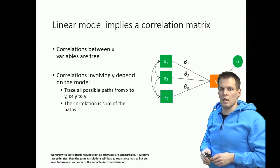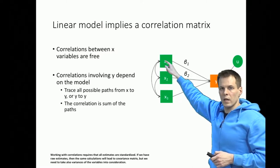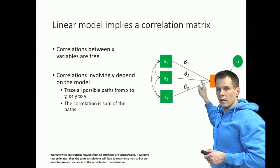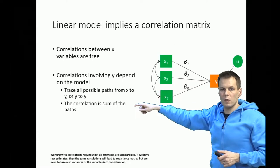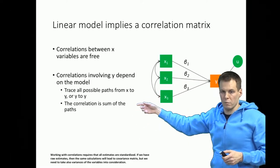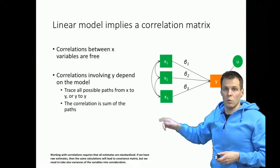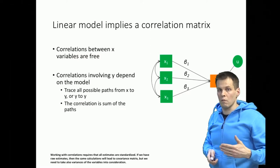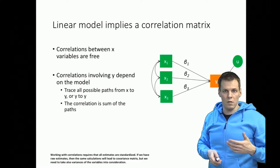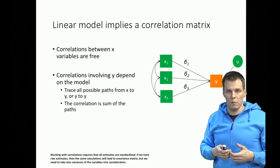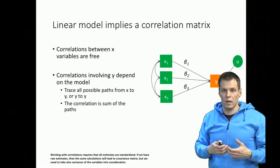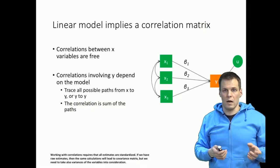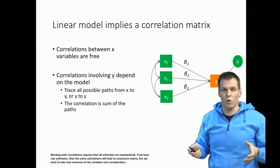In practice, we start from x1 and we trace paths — we check how we can get from x1 to y in different ways, trace all possible paths, and that sum of paths gives us the correlation between x1 and y. This is an important concept because if you understand it, you'll be able to understand certain properties of regression analysis at a much deeper level, and it's also very useful when thinking about factor analysis or structural equation models.